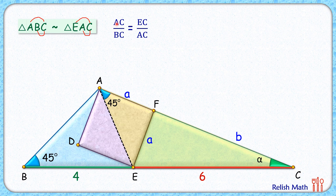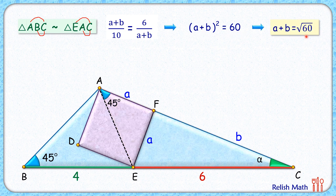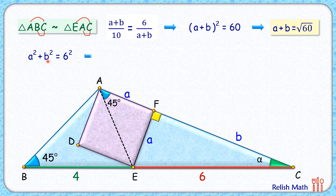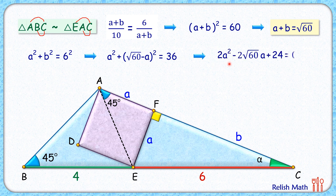Since the triangles are similar, the ratio of corresponding sides is equal: AC/BC = EC/AC. BC is 10 centimeters, EC is 6 centimeters, and AC is (a + b), so cross-multiplying gives (a + b)² = 60, meaning a + b = √60 centimeters. Also, since angle F is 90 degrees, applying Pythagoras in triangle EFC gives a² + b² = 36. Substituting b = √60 − a and expanding gives us a quadratic equation.